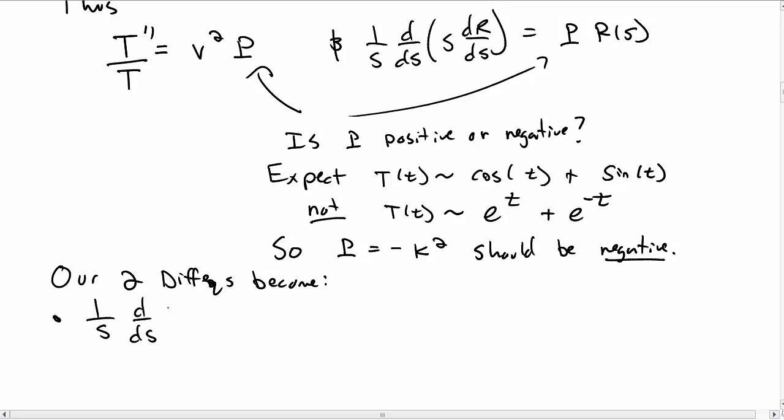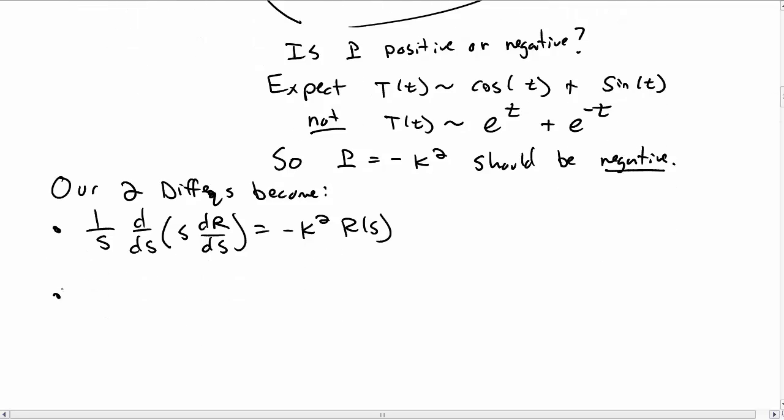One of them is the equation for capital R of s, which equals minus k squared R of s. The other equation is for capital T, which is t double prime equals minus v squared k squared times t of t. In the next video we're going to solve these and impose our boundary conditions to see what types of solutions we get.